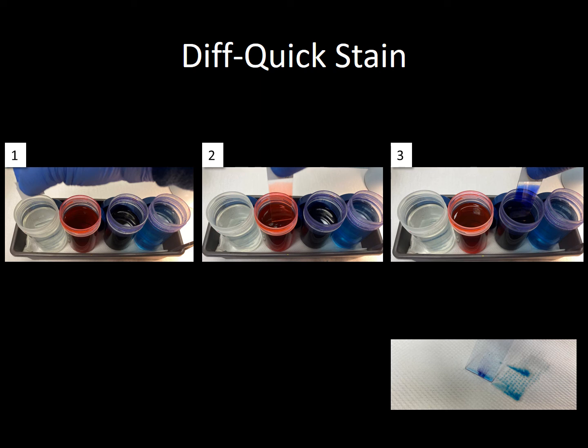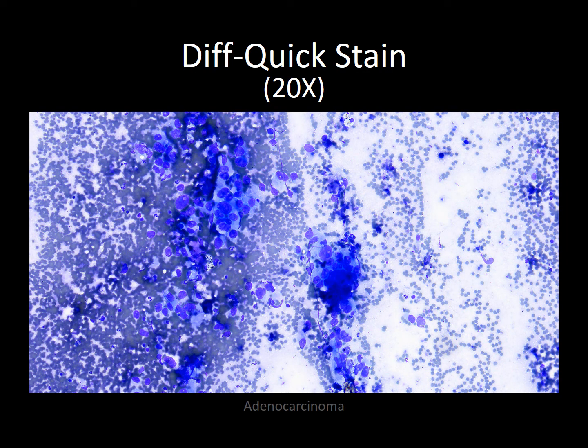For wet slides that were immediately placed in alcohol, they are taken to the lab to be stained with either H&E or Papanicolaou. The Diff-Quik method stains the nucleus in blue to purple color. The cytoplasmic staining is more variable — red or pink for red blood cells, light blue for macrophages and lymphocytes. It often stains cilia pink, which is helpful for identifying bronchial cells.